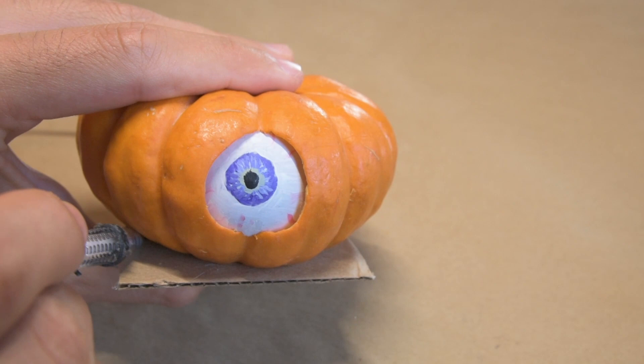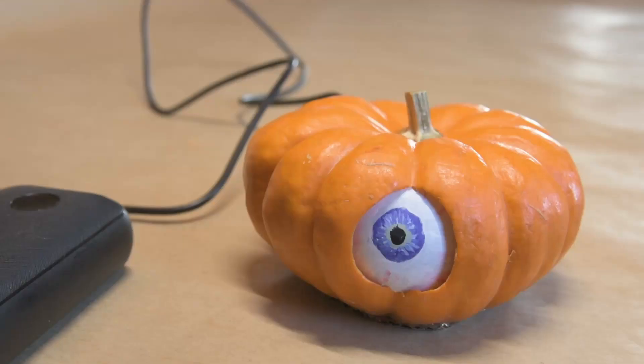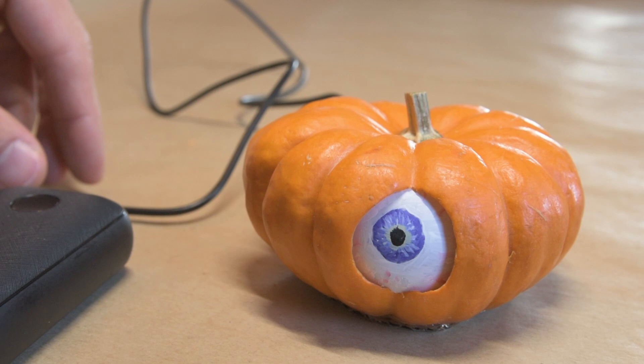To finish assembling the pumpkin, I trimmed the cardboard and hot glued it on. What's great about the Arduino is that you can just plug it into a USB battery pack or a USB wall charger to power it.